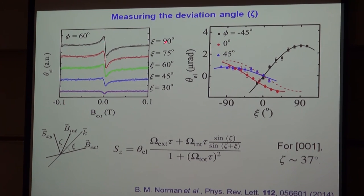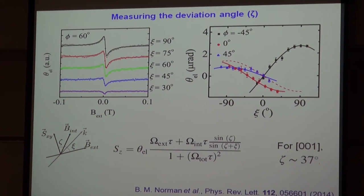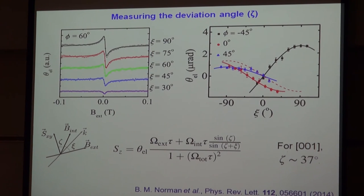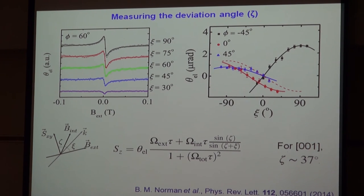One thing you'll notice is that the signal is larger when the spin-orbit field is perpendicular to the applied magnetic field — that's when the applied magnetic field can most effectively give you spin precession out of the plane, which is what we measure. We do most of the measurements in that configuration, finding the angle where the applied magnetic field is perpendicular to the spin-orbit field. It also changes character as you change the angle. This shows that the phenomenological model is a reasonable description of what happens, even if we don't know microscopically what causes the effect.